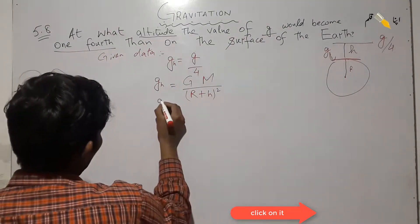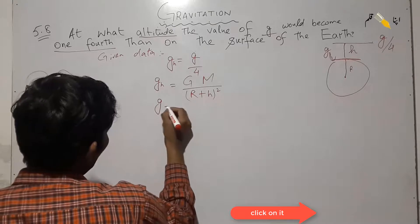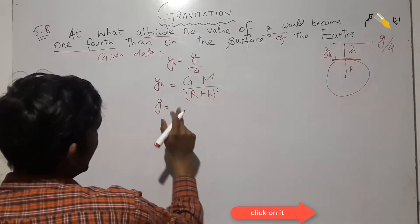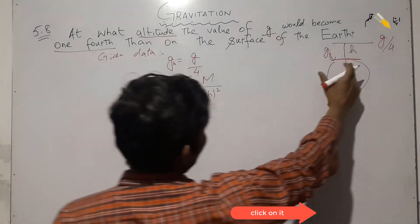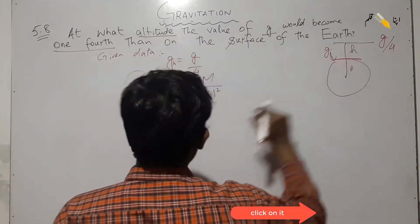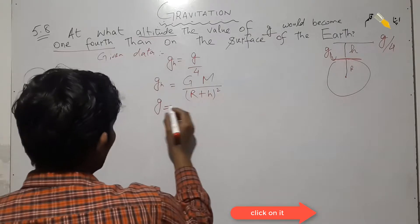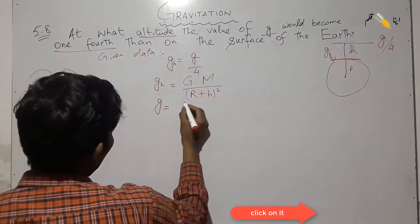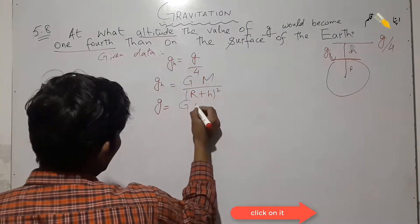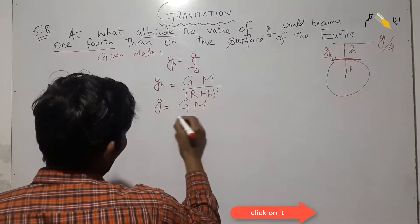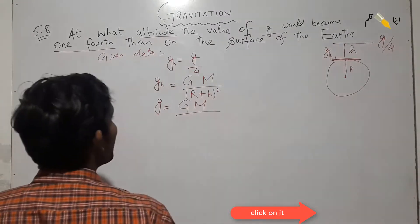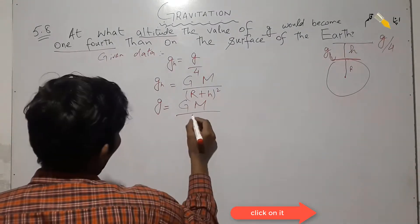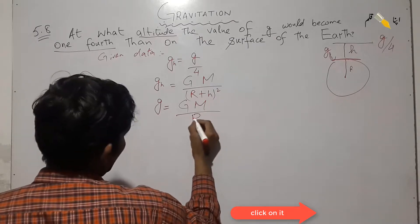And the gravitational acceleration g at the surface of the earth is: g = GM over r squared.